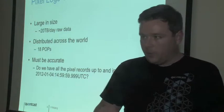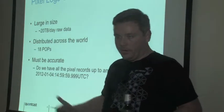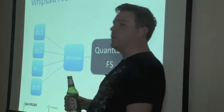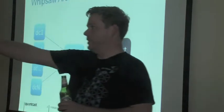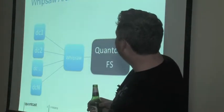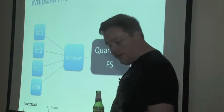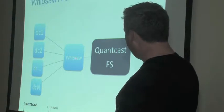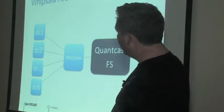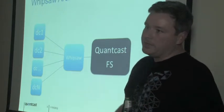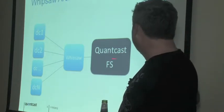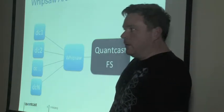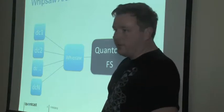In order to pull that data into the data center in a useful way, we've created something called Whipsaw. The way this works — we have a central system that connects to each of our remote data centers, sucks all that data down, and stores it in a consistent place in our Quantcast file system, which is an optimized version of the Cosmos file system.